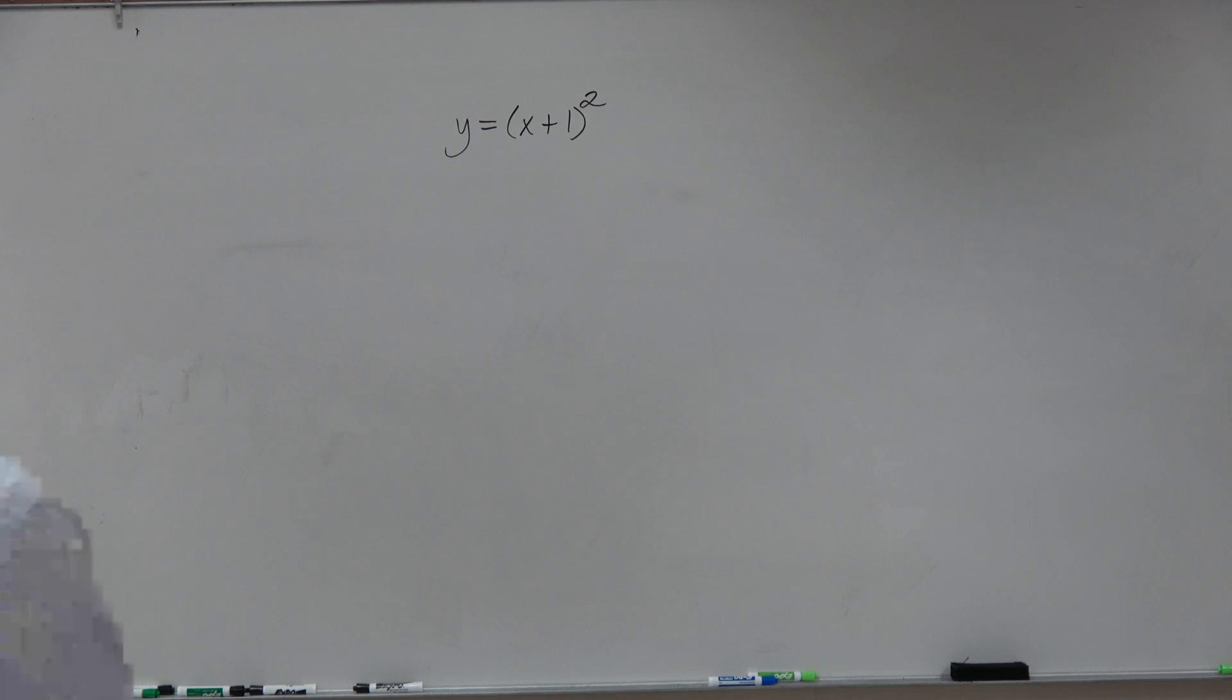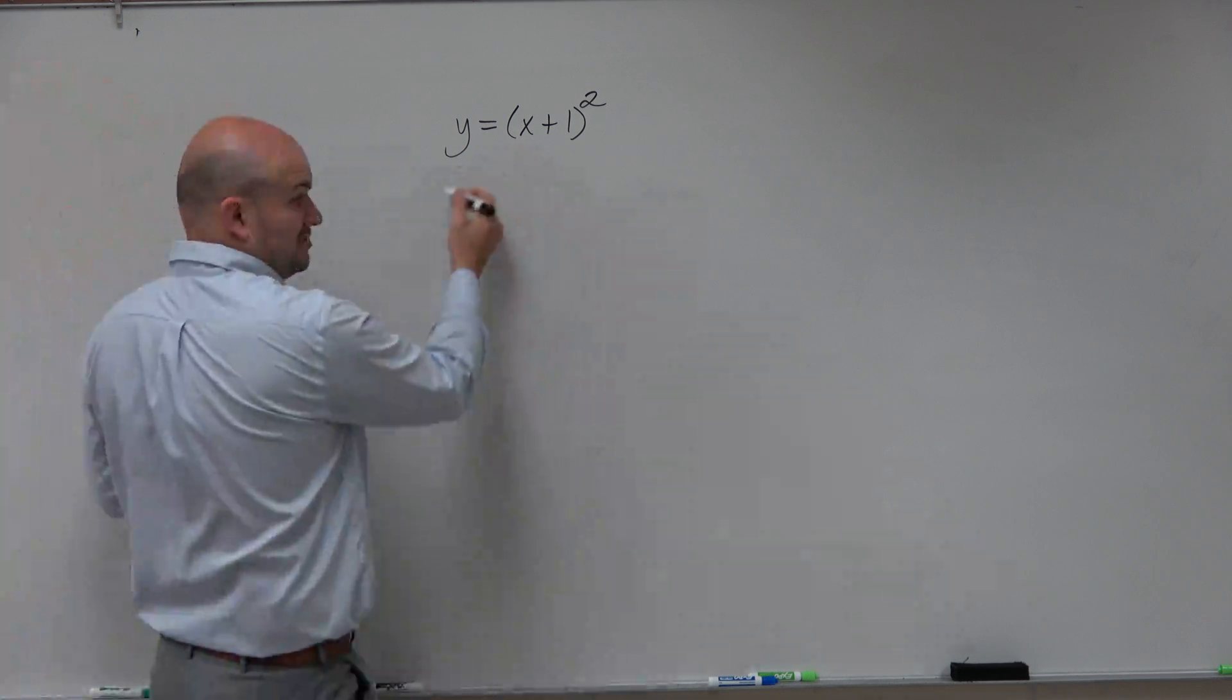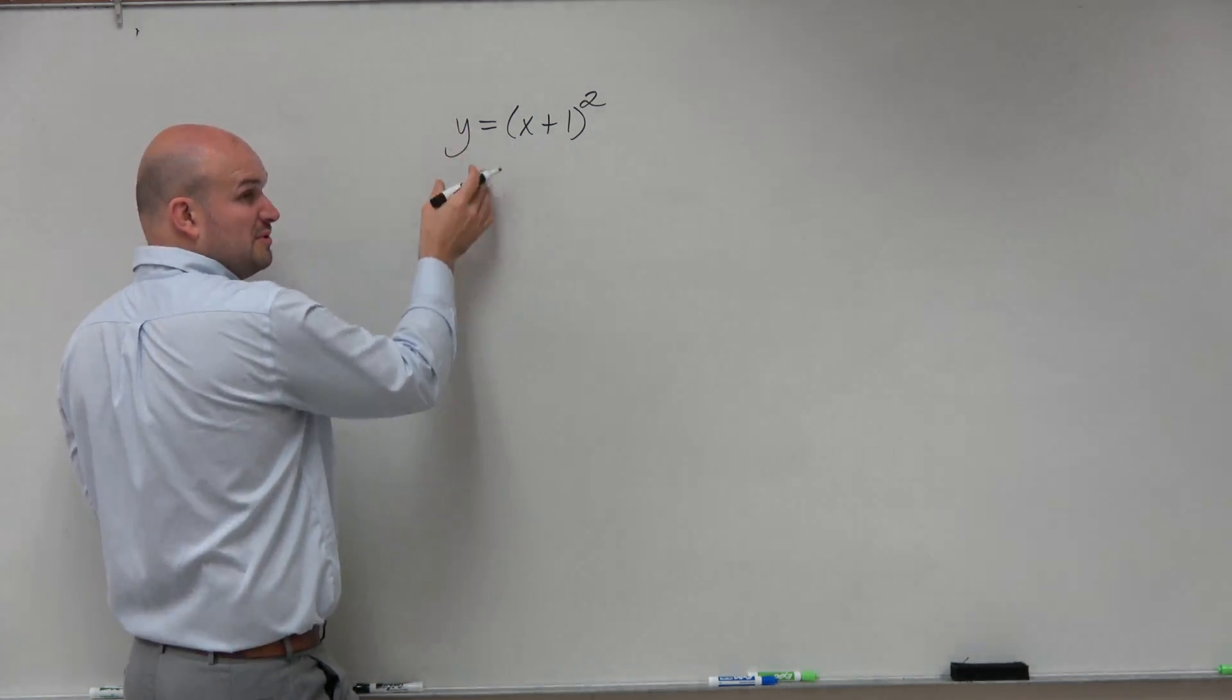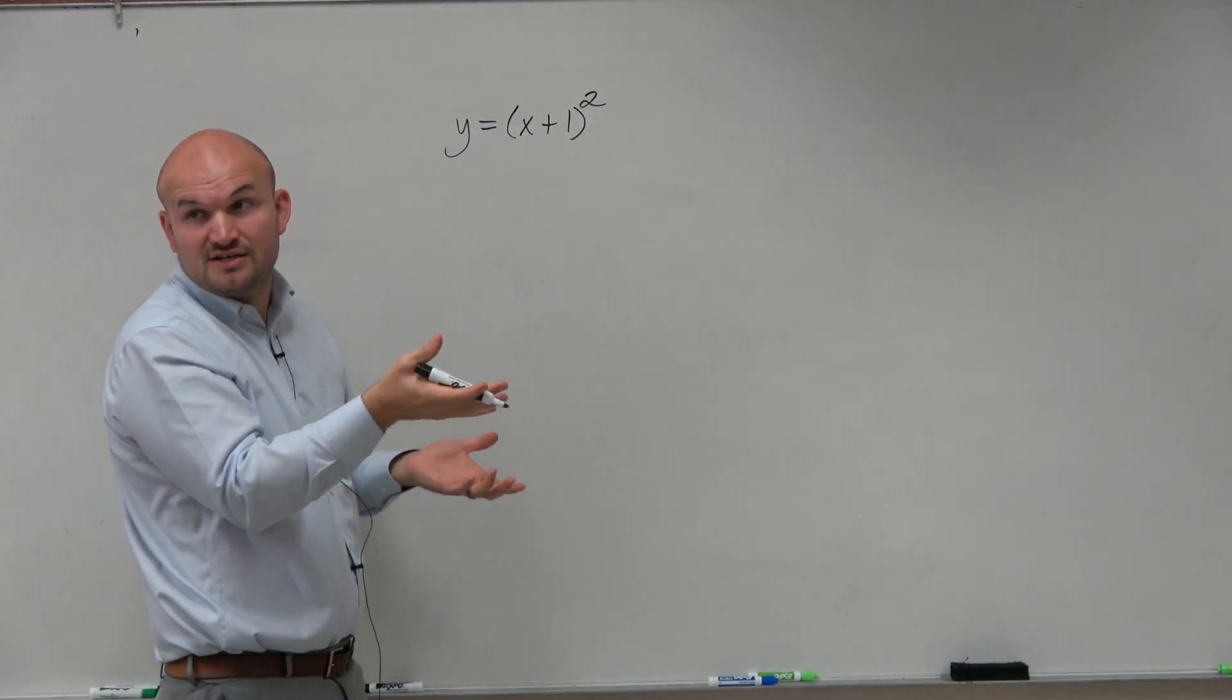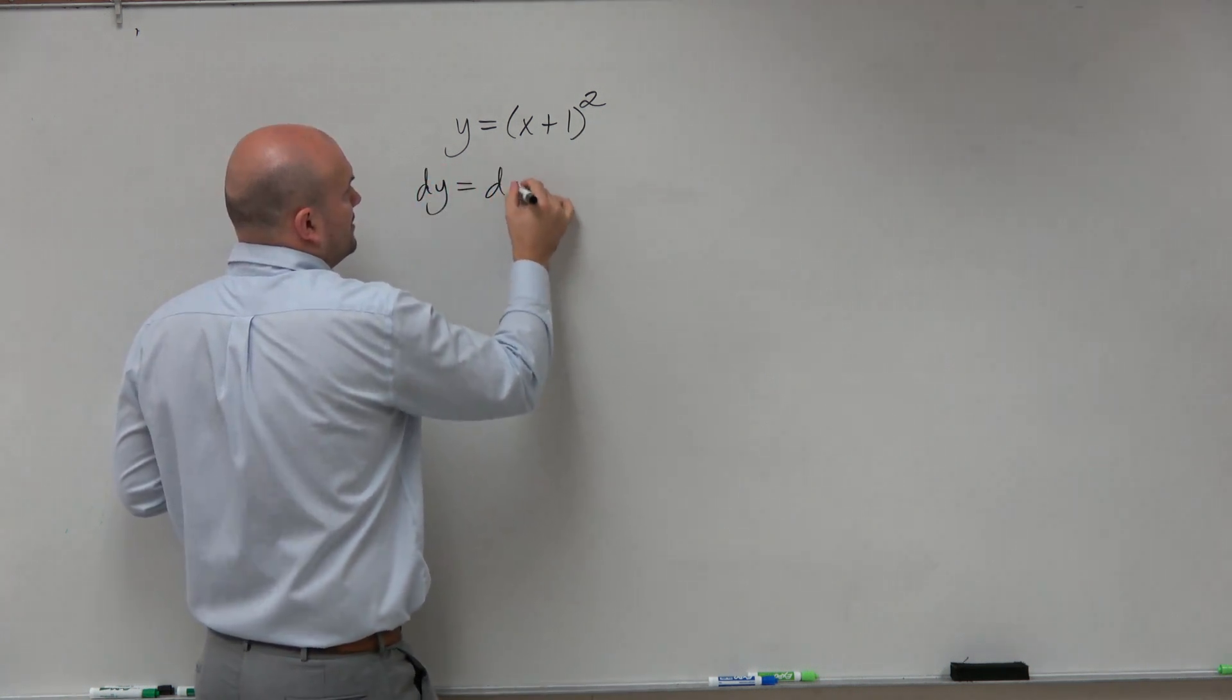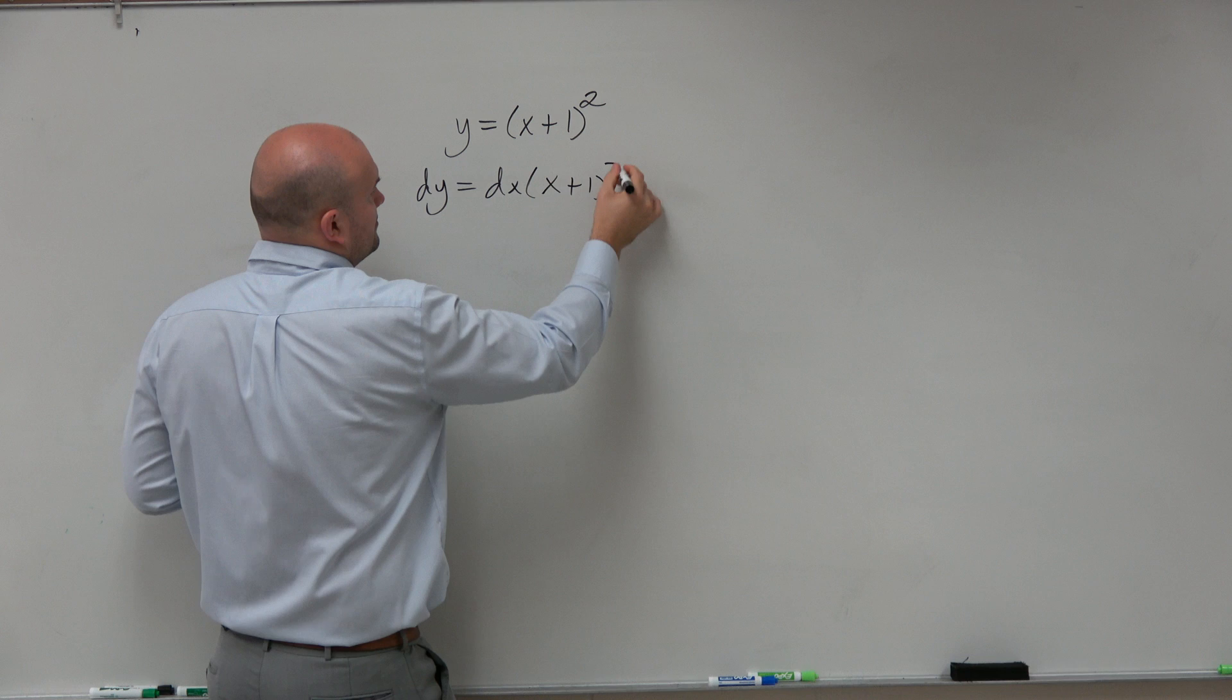Well guys, you can see that this is a binomial squared, right? And if we want to go ahead and find the derivative, basically what we want to do is we want to find the change in y over the change of x. So we can rewrite this as dy equals dx times x plus 1 squared.